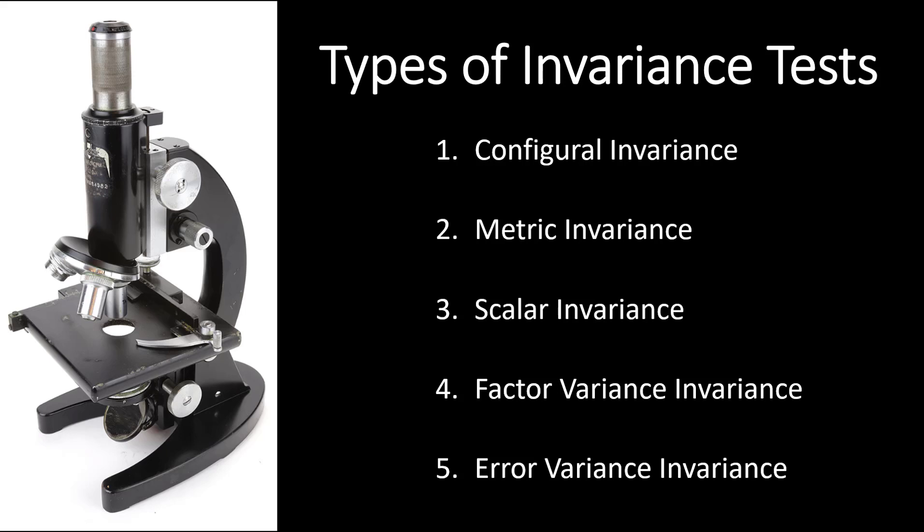There are really five types of invariance tests you commonly see required: configural invariance, metric invariance, scalar invariance, factor variance invariance, and error variance invariance. Configural invariance is probably the easiest to establish, and error variance invariance is probably the hardest to establish.